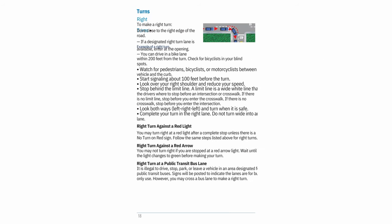Right turns: To make a right turn, drive close to the right edge of the road. If a designated right turn lane is available, enter at the opening. You can drive in a bike lane within 200 feet from the turn — check for bicyclists in your blind spots. Watch for pedestrians, bicyclists, or motorcyclists between your vehicle and the curb. Start signaling about 100 feet before the turn. Look over your right shoulder and reduce your speed. Stop behind the limit line, or before the crosswalk if there is no limit line, or before the intersection if there is no crosswalk.